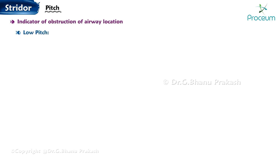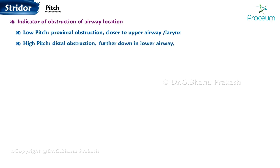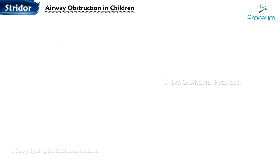Pitch is an indicator of airway obstruction location. Low pitch indicates a proximal obstruction closer to the upper airway or larynx. High pitch indicates a distal obstruction further down in the lower airway, such as in the trachea or bronchi.